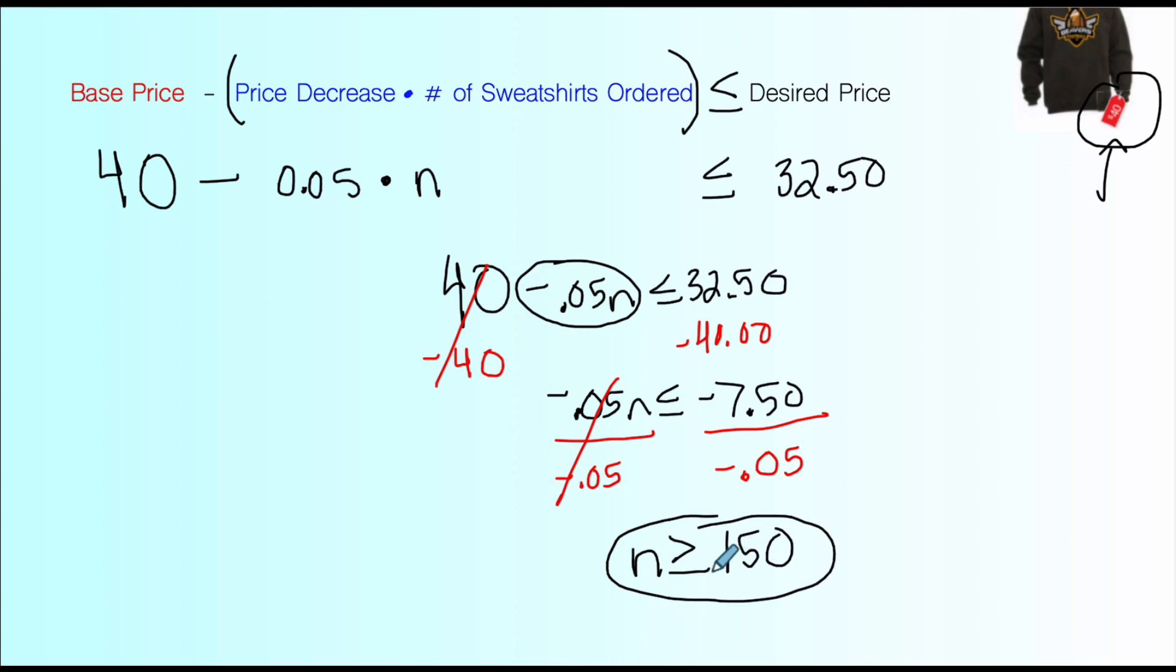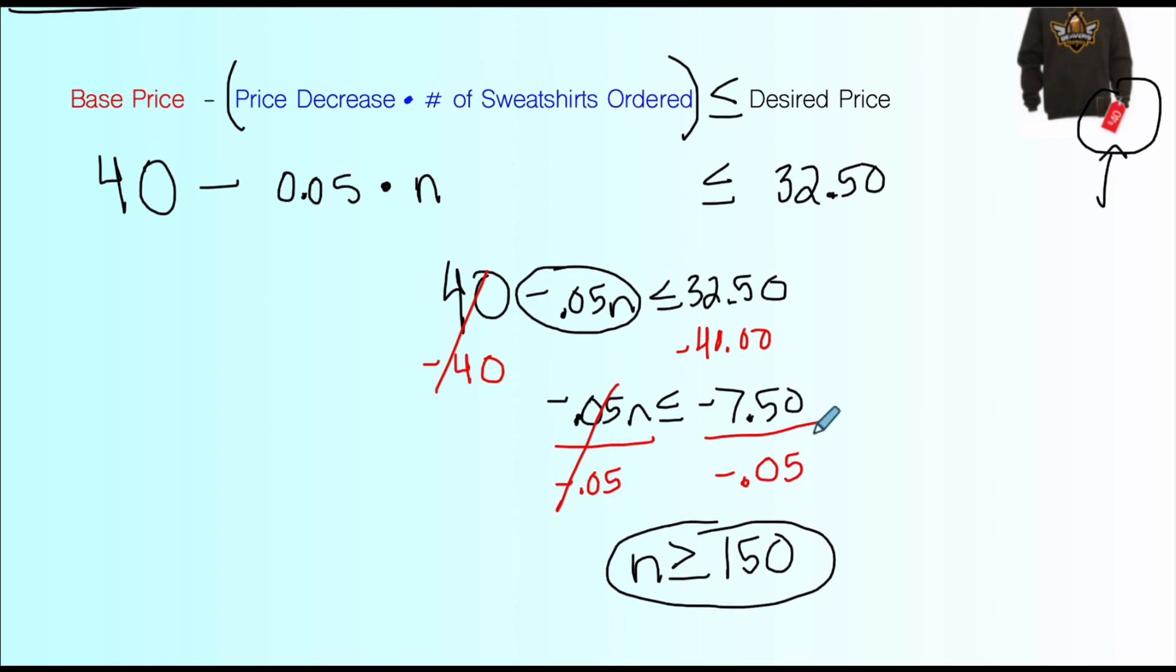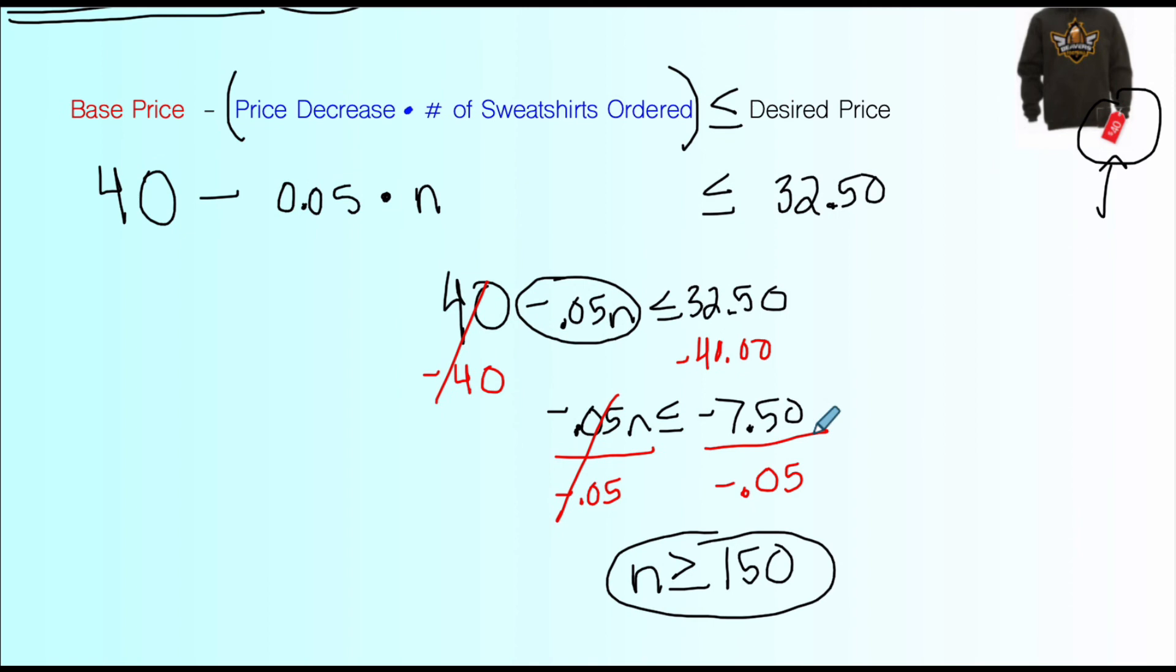So let's take this and go back to the original problem and see if what we've found makes sense. The ultimate question was, how many sweatshirts does the team need to order so that they have a price per sweatshirt that's not greater than $32.50? As long as they order 150 sweatshirts or more, they will have a price per sweatshirt that is $32.50 or less. It won't be bigger than that. So as long as they hit 150, they'll be at $32.50. And anything over 150 sweatshirts, the price will keep going down by 50 cents per sweatshirt. So this was a little bit involved, but you can do something like this.